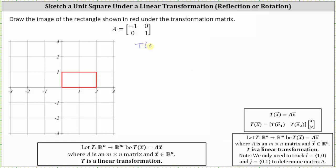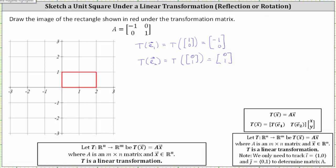We know the transformation of the vector e₁, which is the transformation of the vector (1, 0), is equal to (-1, 0) — the first column of matrix A. If we plot the vector (1, 0), notice how it's half the length of the side along the positive x-axis. The transformation of this vector is the vector (-1, 0), which is the unit vector along the negative x-axis.